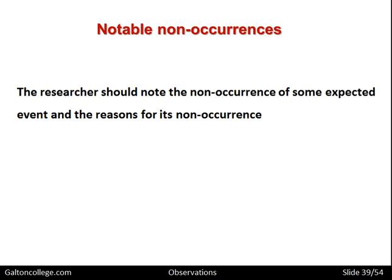Notable non-occurrences should also be noted. The researchers should note the non-occurrences of some expected events and the reasons for the non-occurrence. Sometimes events are expected and when they don't happen, some reason must be sought as to why. The researcher in an observational context is better placed to find out why something did not happen, as well as why things did happen — they are able to pick up on non-occurrence just as much as occurrence.